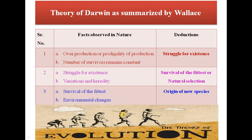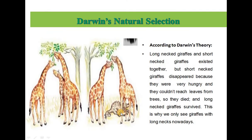This is how Wallace summarized Darwin's theory. According to Darwin's natural selection, long-necked and short-necked giraffes existed together. But short-necked giraffes disappeared because they were very hungry and couldn't reach the leaves from the trees, so they died. Long-necked giraffes survived. This is why we only see giraffes with long necks nowadays.